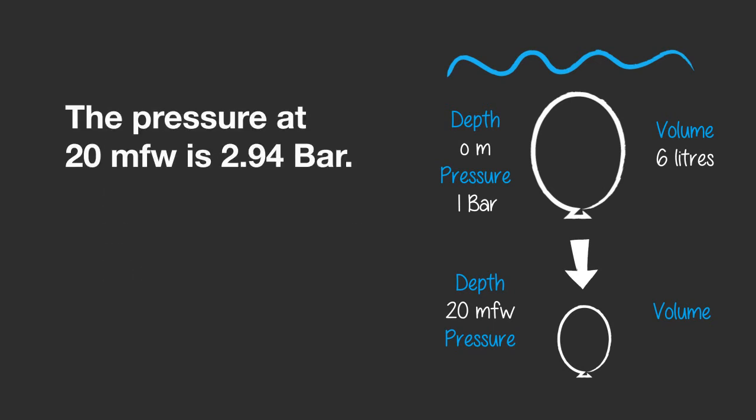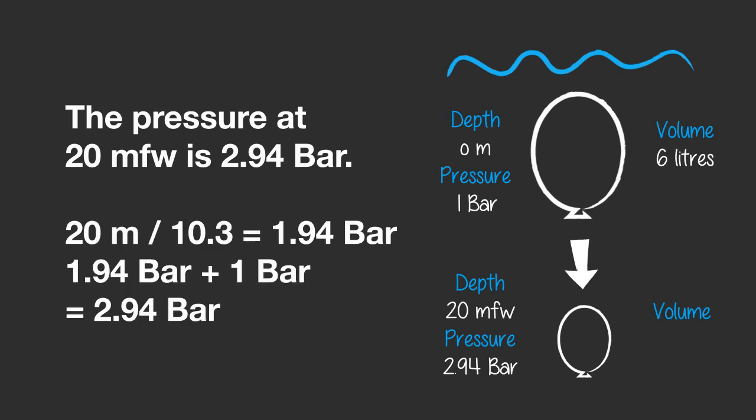First, find out the pressure at 20 meters of freshwater. It is 2.94 bar. Remember, 20 meters divided by 10.3 equals 1.94, plus 1 bar of the surface pressure equals 2.94 bar in total.